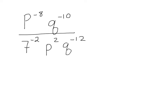We have a similar example. We've got a negative exponent here: p to the negative 8, and q to the negative 10. We've also got 7 to the negative 2 power and q to the negative 12.